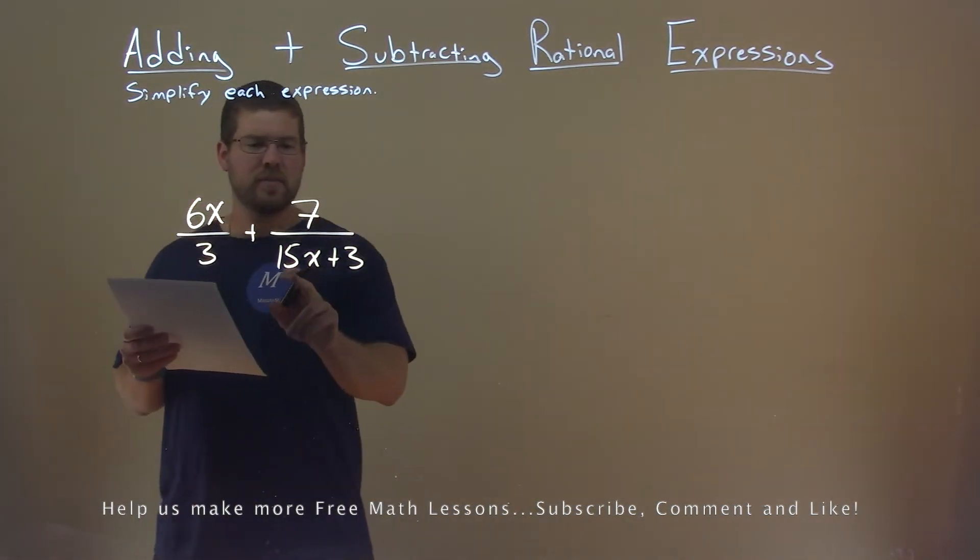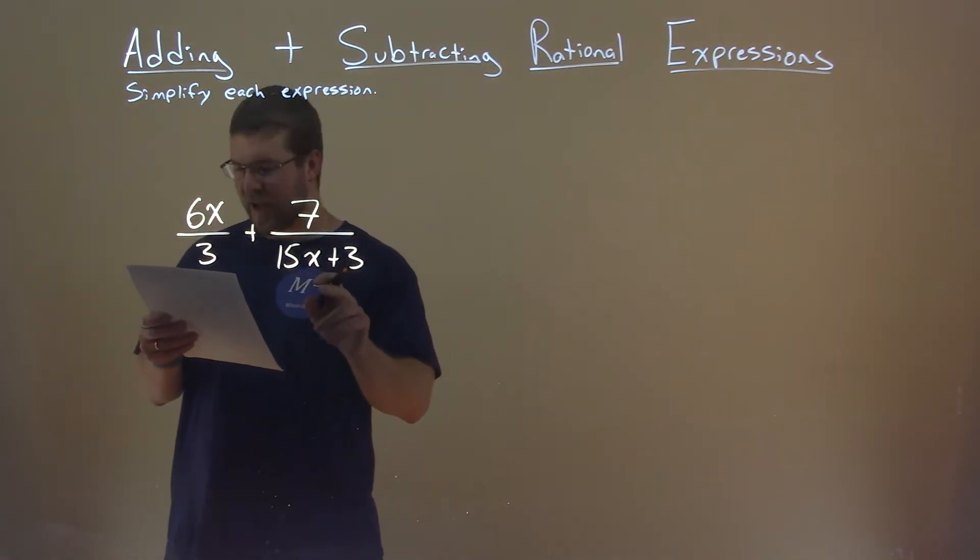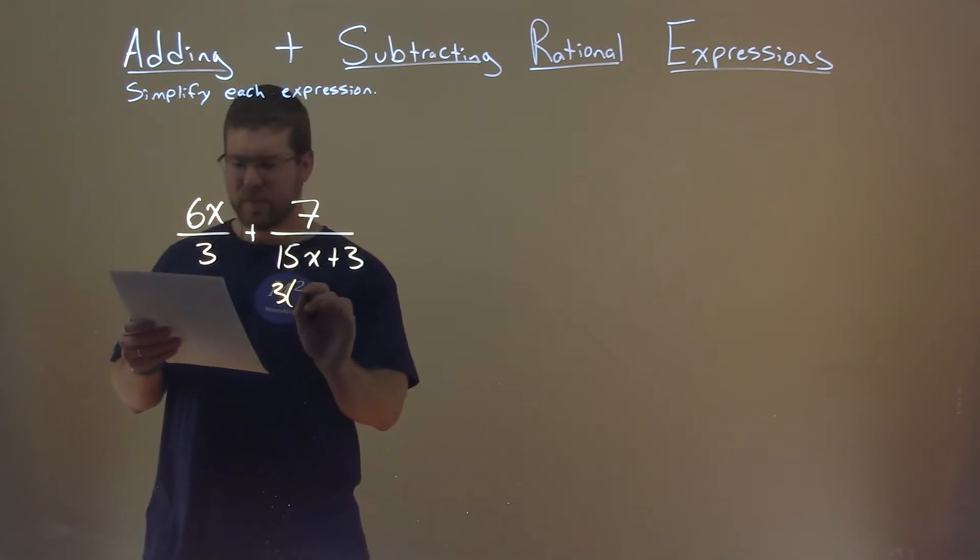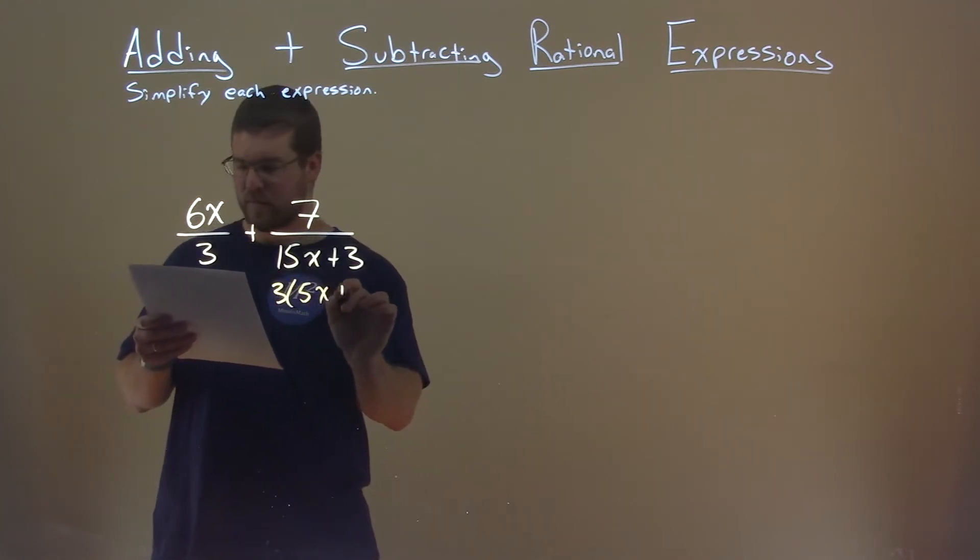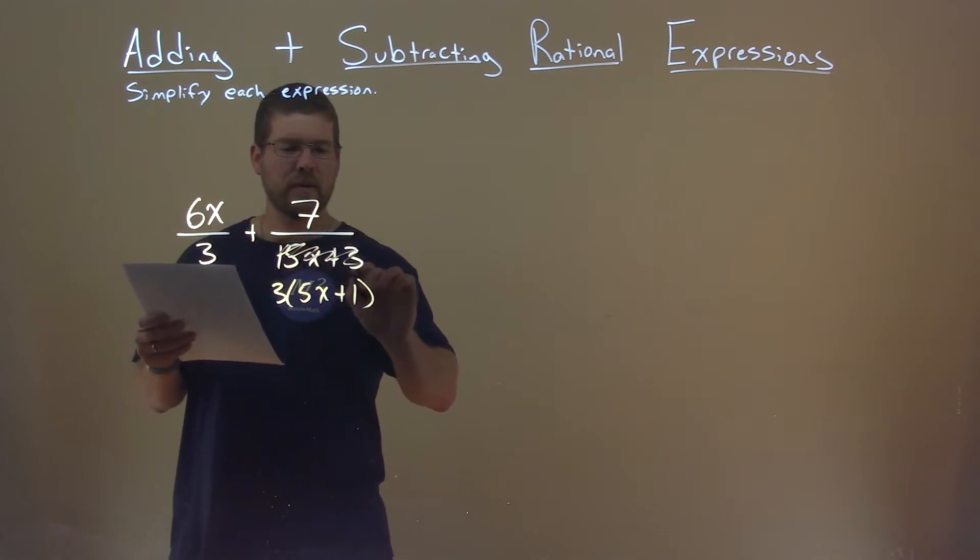Well, first thing I'm noticing is this 15x plus 3. I can pull a 3 out, and I'm left with a 5x plus 1 in the denominator. So let's replace that.